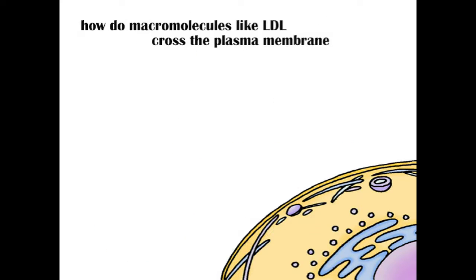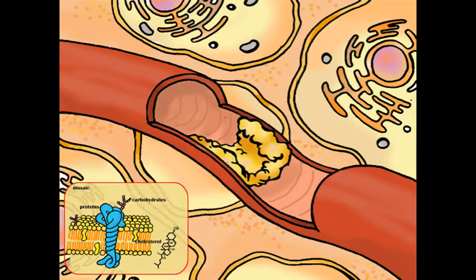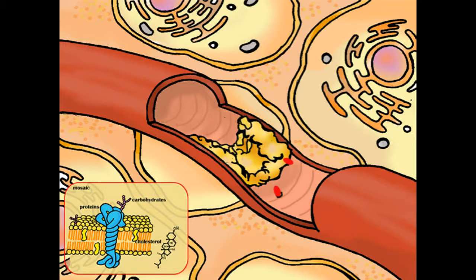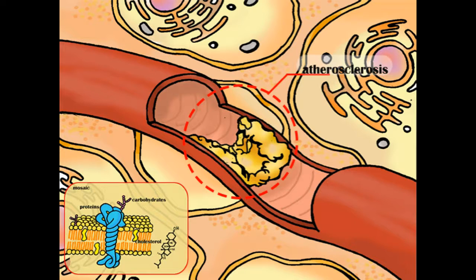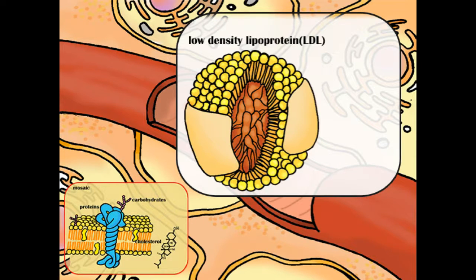How do macromolecules like LDL cross the plasma membrane? The plasma membrane is a mosaic of biomolecules, such as cholesterol, proteins, and carbohydrates, embedded in the phospholipid bilayer. When cholesterol is circulated in the bloodstream, its hydrophobicity causes it to deposit in the epithelium of blood vessels, resulting in atherosclerosis. Thus, the major form of cholesterol transport in the bloodstream is cholesteryl esters packaged in apoproteins, forming low-density lipoproteins, or LDL.